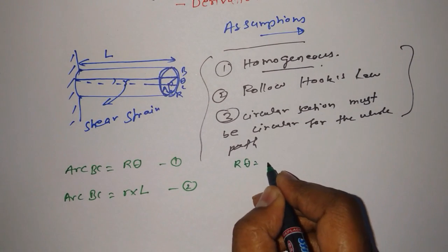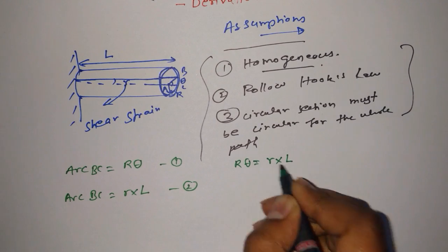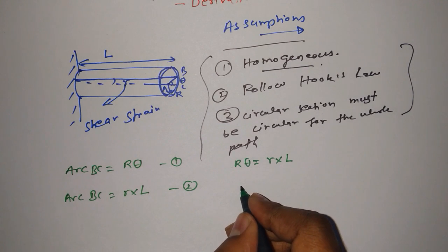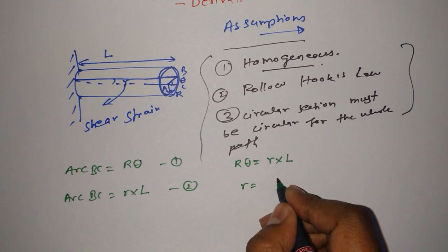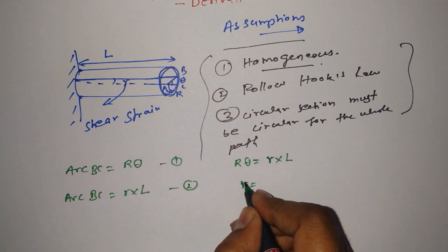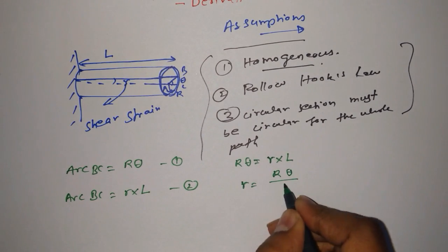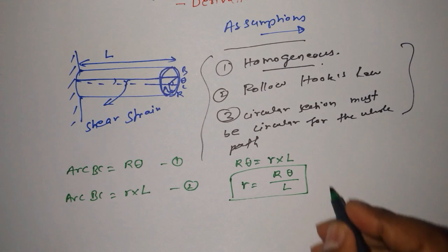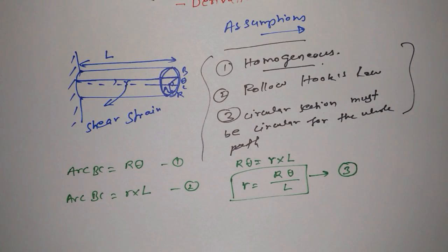From these two equations we can say that R·theta is equal to gamma times L. We can also say that gamma is equal to R·theta divided by L. Let's call this equation number 3.